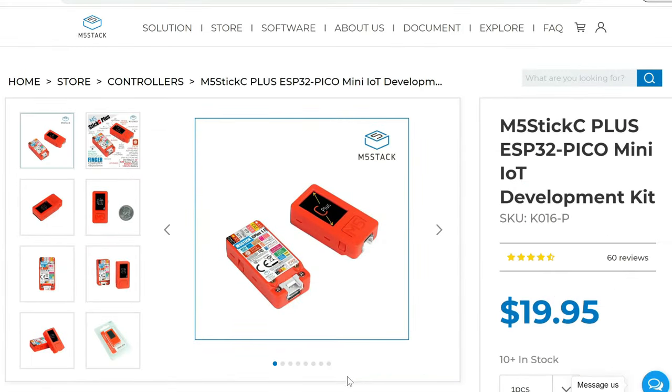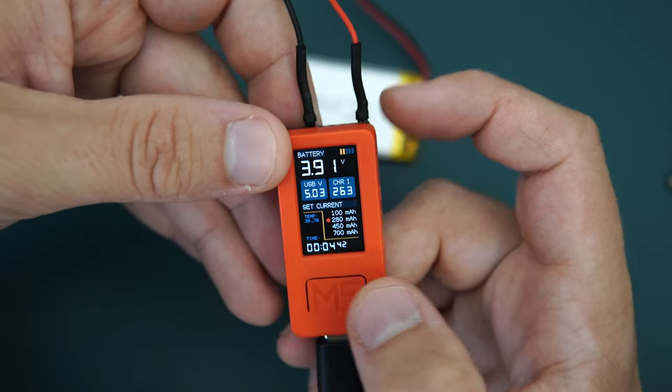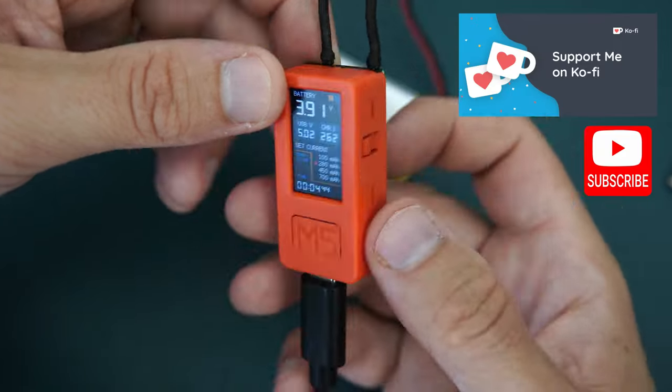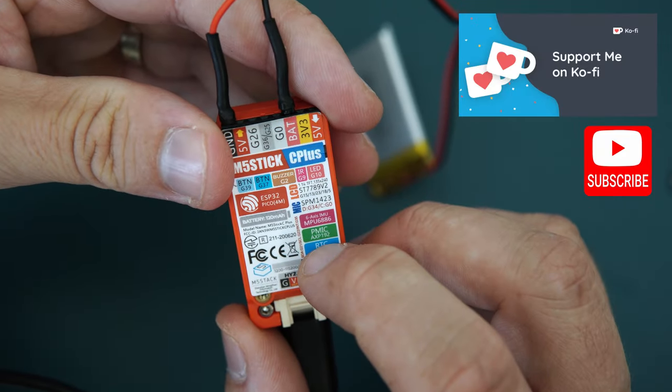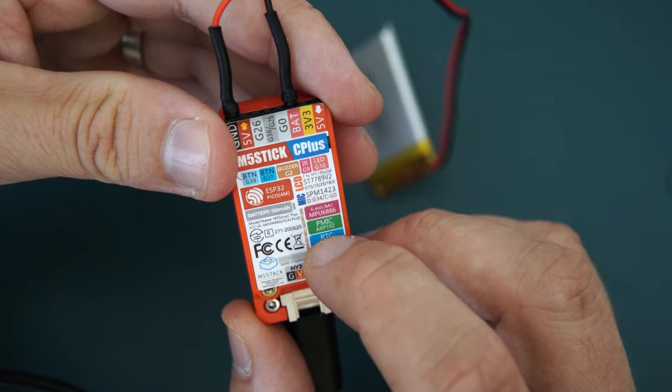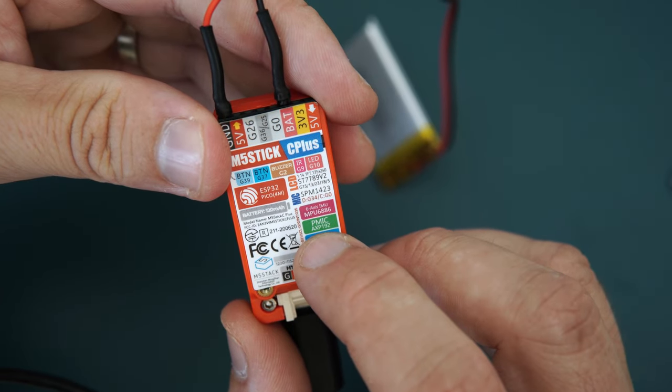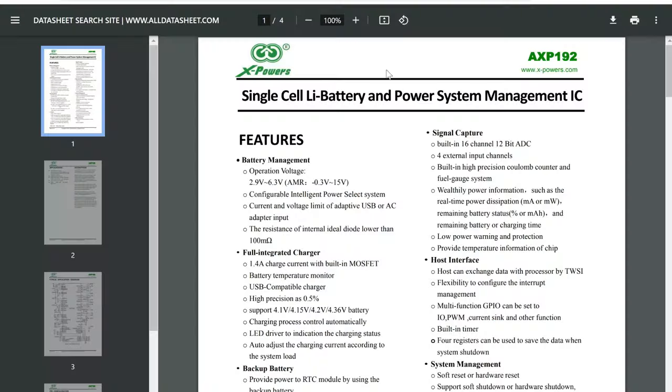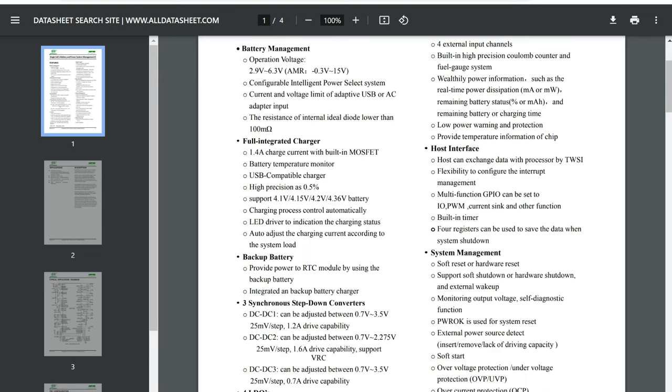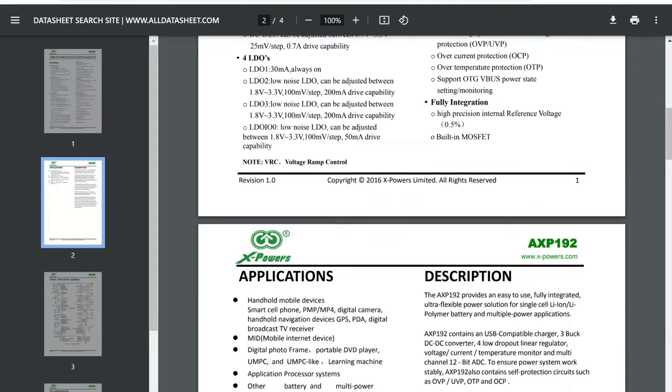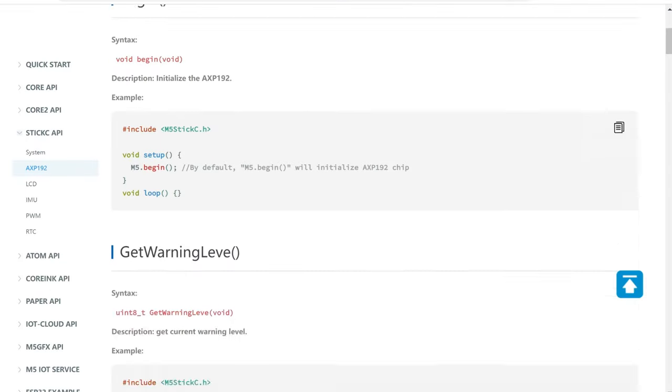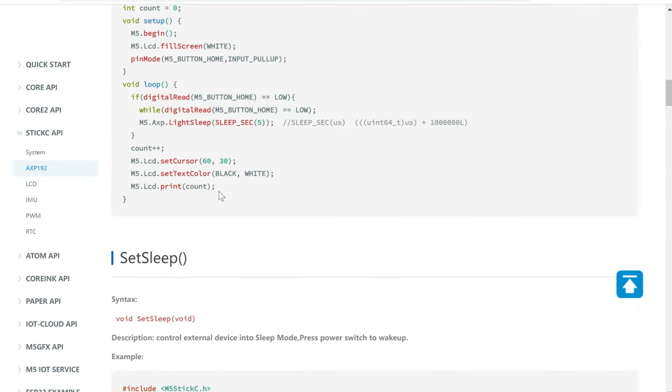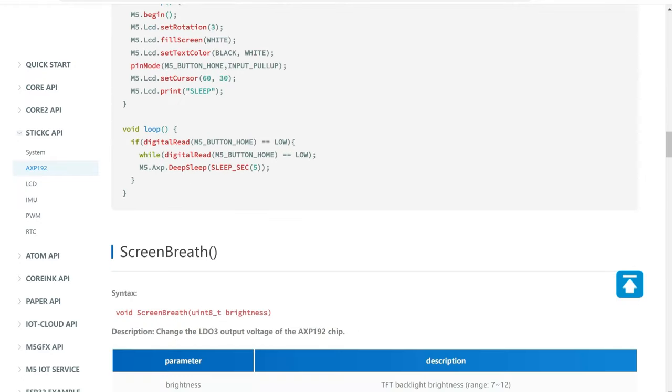But the main reason why I decided to use this is because M5 Stack boards very often have power management ICs included. In this case, AXP192 chip is used to power the device, to power peripherals, to recharge batteries properly, and more. This chip can easily communicate with the ESP32 chip so we can access all these data very easily.